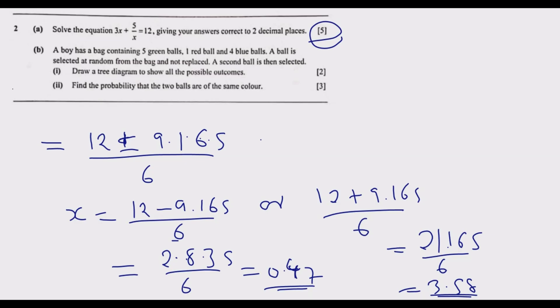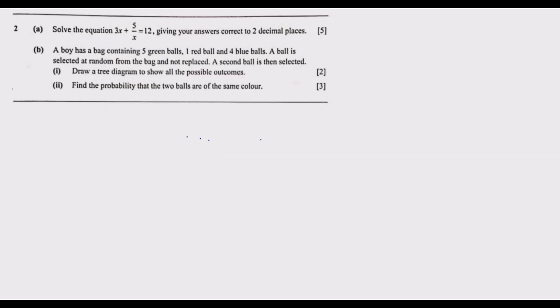Now let's go to question (b). A boy has a bag containing 5 green balls, 1 red ball, and 4 blue balls. A ball is selected at random and not replaced, then a second ball is selected. We need to draw a tree diagram showing all possible outcomes, then find the probability that the two balls are the same color.